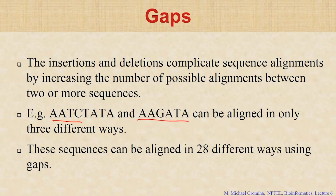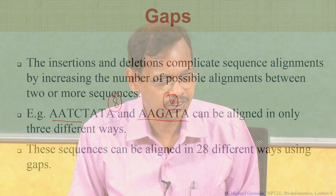Here, the length is 1, 2, 3, 4, 5, 6, 7, 8. So here we have lengths of 3 and 6. How many different ways can you align these two sequences if you introduce gaps? There are 28 different ways you can align these two different sequences.